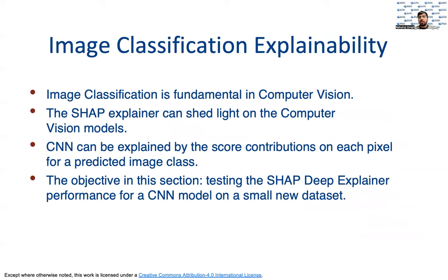Image classification can be considered as the fundamental topic for computer vision. For these problems, SHAP Deep Explainer can be one of the most used ways of explaining deep learning models. The advantage is that SHAP provides both global and local explainability. In this tutorial, we are going to use a simple multi-class image classification problem to illustrate a deep learning explainability model with the SHAP Deep Explainer. The idea here is to test this explainer's performance for a CNN pre-trained model in which only the final layer is trained based on three classes for a small dataset.